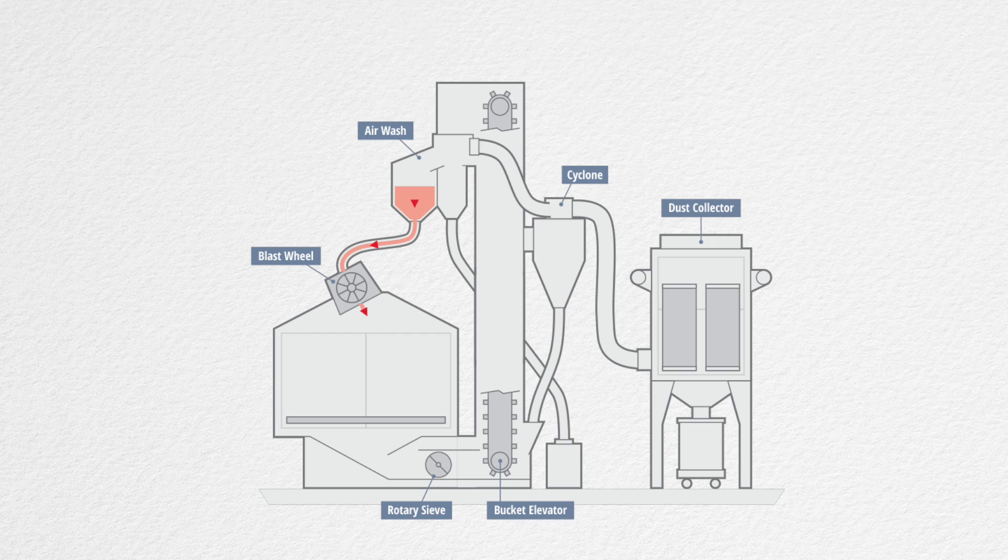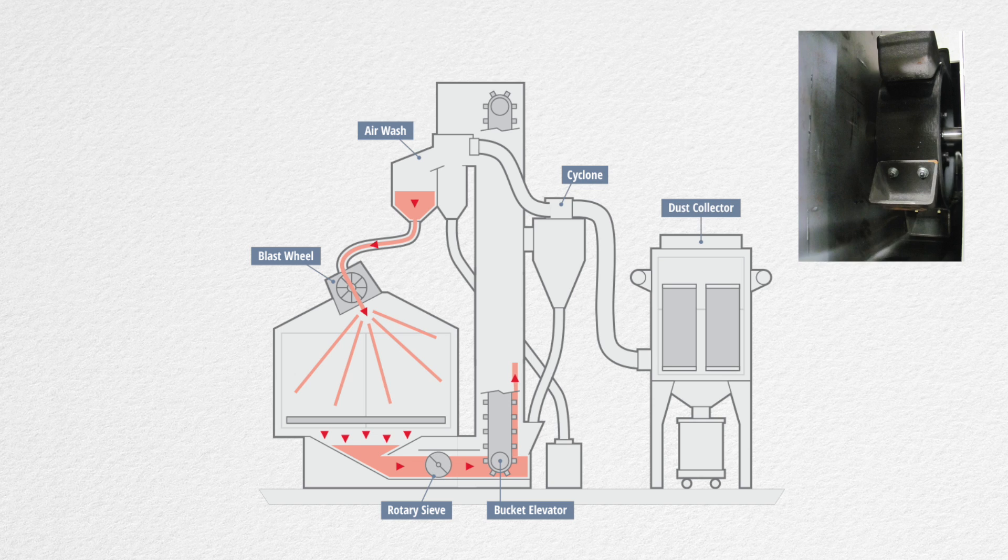The hopper feeds media into the blasting wheel, which distributes media into the cabinet. Used media falls to the bottom of the cabinet, where heavy and broken particles are removed by the sieve, while the rest is moved to the base of the bucket elevator. The bucket elevator lifts the media to the top of the machine.